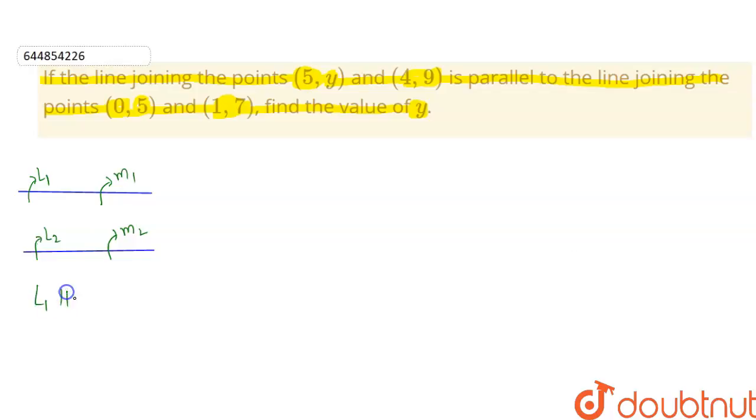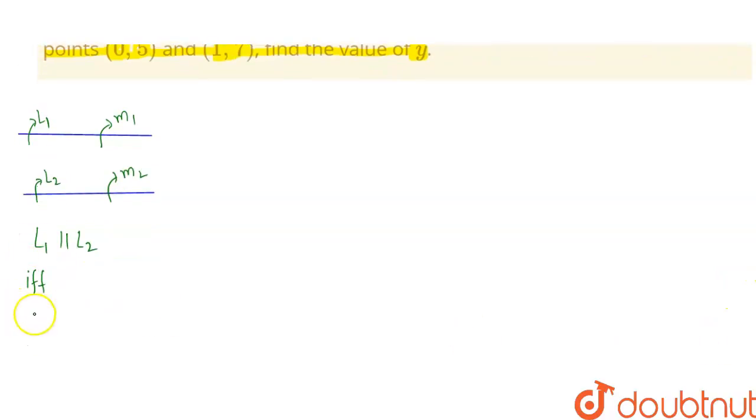Line 1 will be parallel to line 2 if and only if their slopes are equal: m1 will be equal to m2. This is the condition for two lines to be parallel.